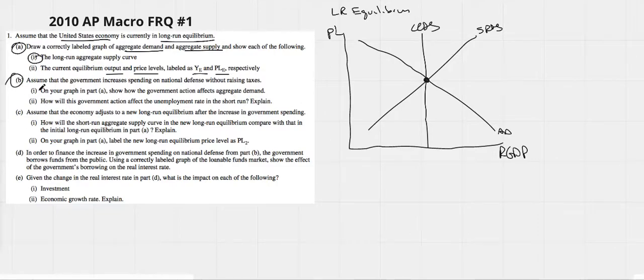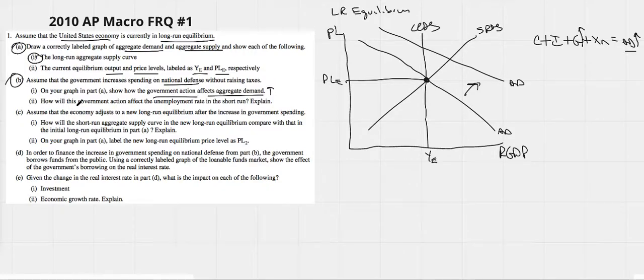Alright, good to go. Assume that the government increases spending on national defense. So now, out of the C plus I plus G plus XN, which is, let's just call it aggregate demand, the G goes up. If the G goes up, the aggregate demand has to go up. So our aggregate demand curve shifts to the right. Let's go back and label. Y-E, P-L-E, and Y-E. Alright. Aggregate demand shifts to the right. We are now in what we would call an inflationary scenario. On your graph, show how the government action spending affects aggregate demand. It is going to go up as we showed it.